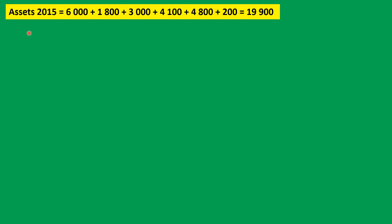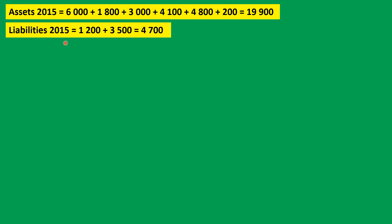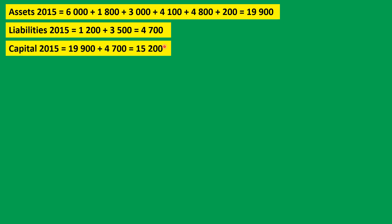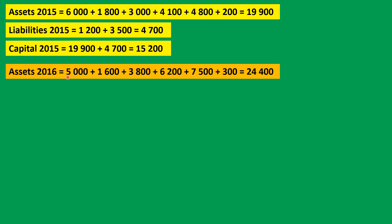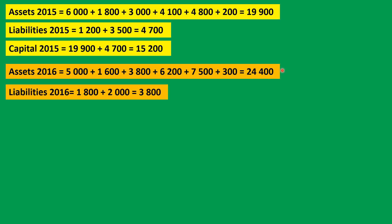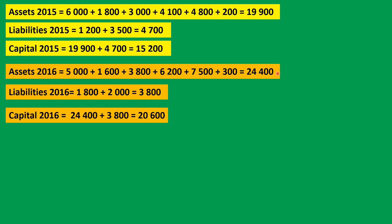First, we calculate the assets at the beginning of the year — we take all the assets and add them together and get 19,900. Next, we calculate the liabilities for 2015: there are two figures and we get 4,700. Then we calculate the capital by taking the assets and minus the liabilities, giving us 15,200. Next, we move to the end of the year 2016 — we add up all the assets at that date and get 24,400, then add up all the liabilities to get 5,800. The capital at the end of the year is 24,400 minus 5,800 equals 20,600.